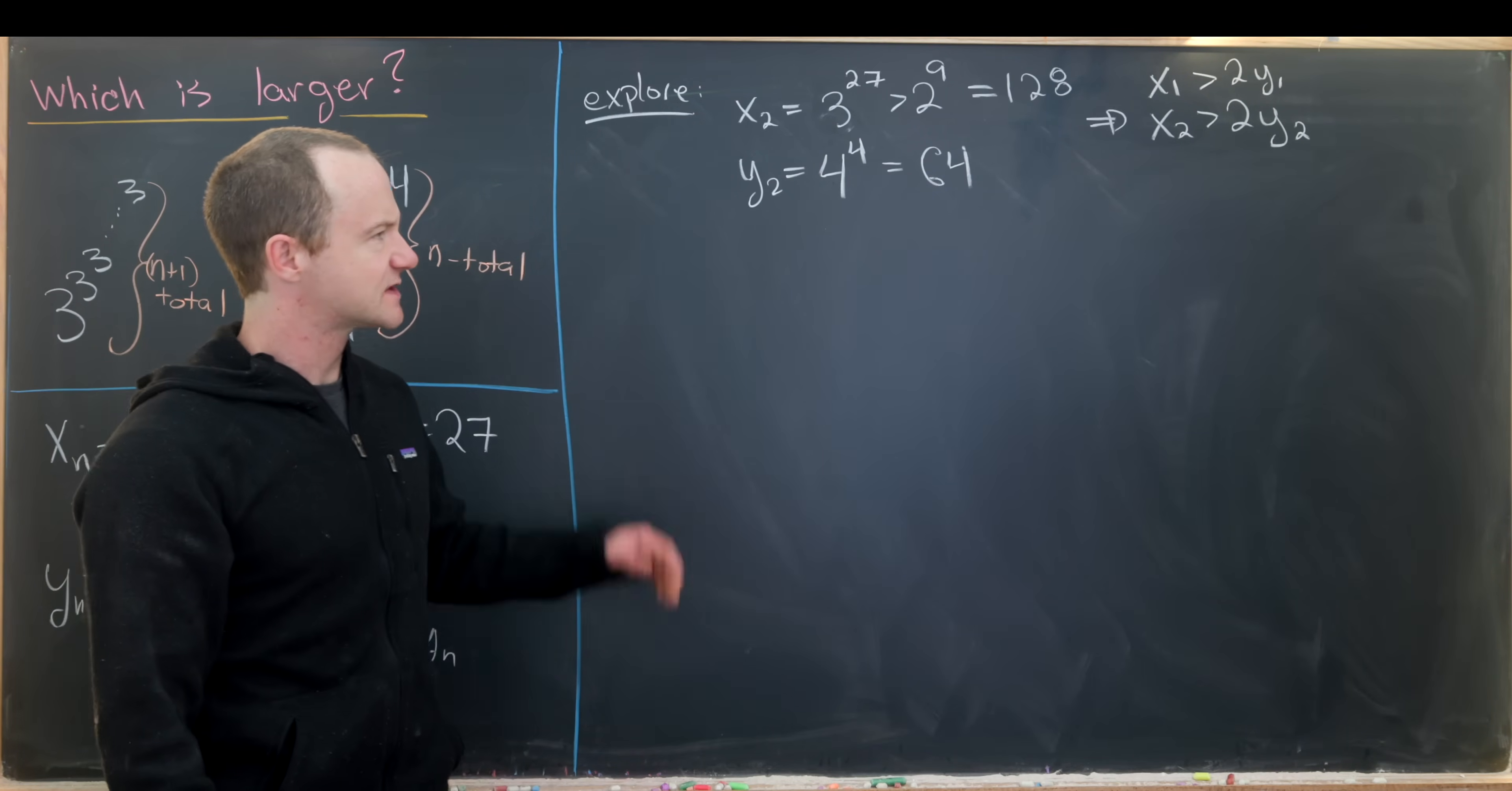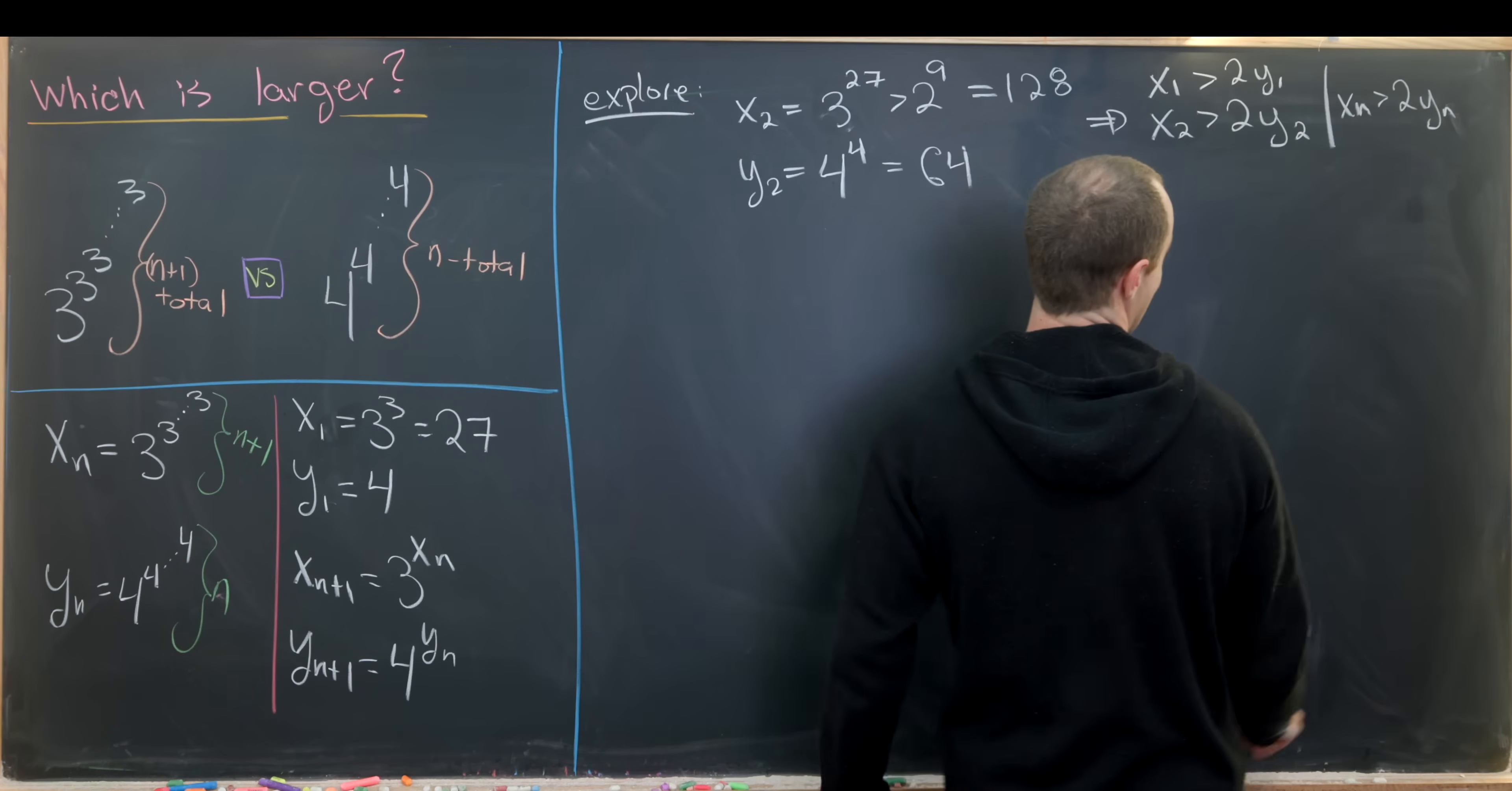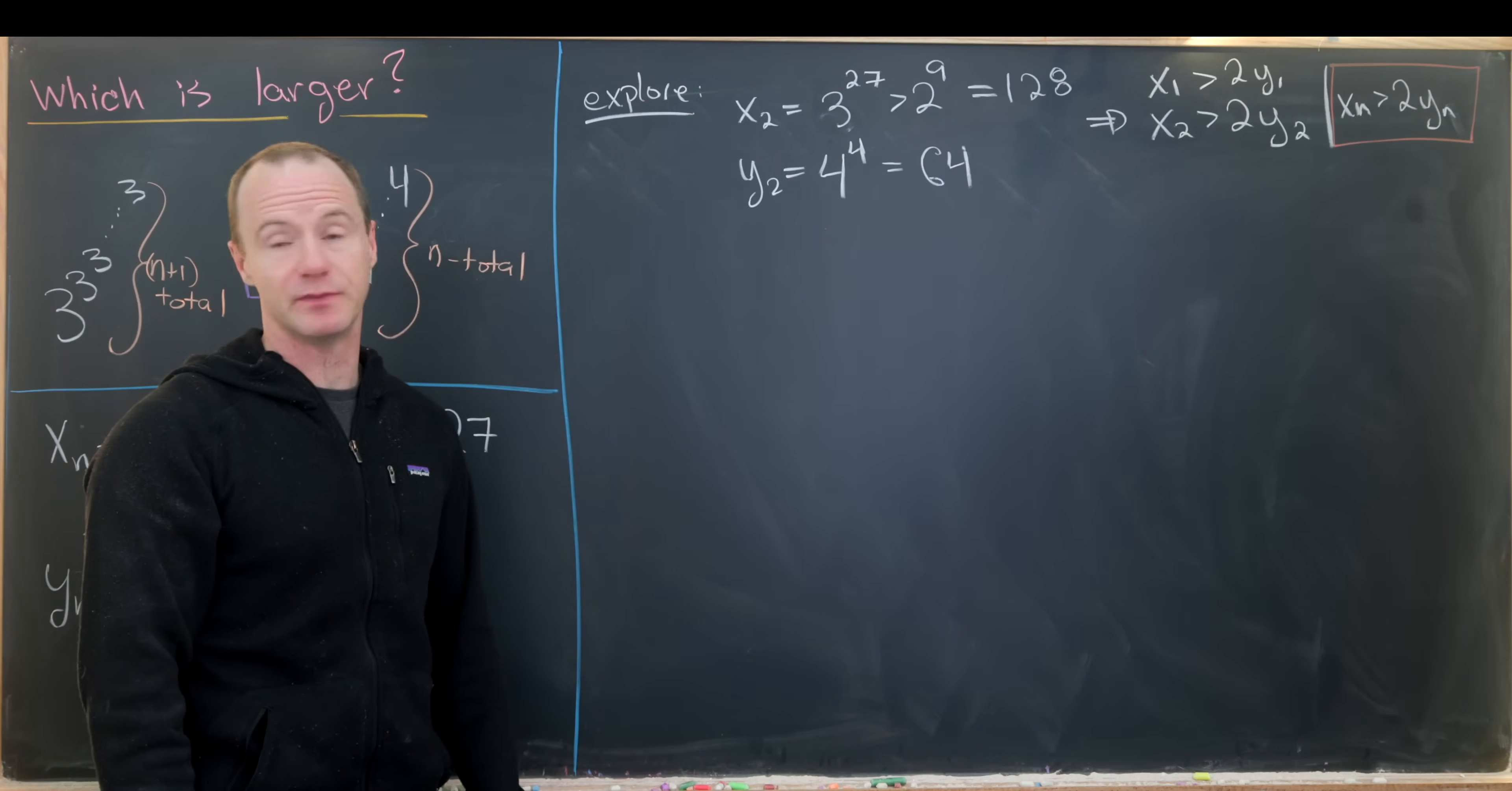So it looks like in general that we might have xn is larger than 2 times yn. And so not only is xn bigger than yn, but it's bigger than twice yn. And we're actually going to take advantage of the fact that it seems to be bigger than twice yn because that'll make our solution a little bit better.